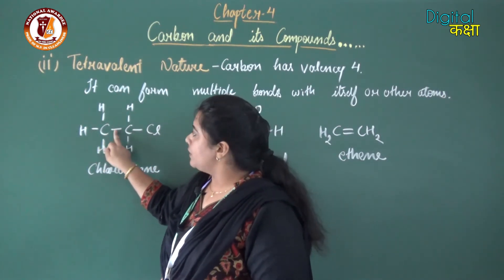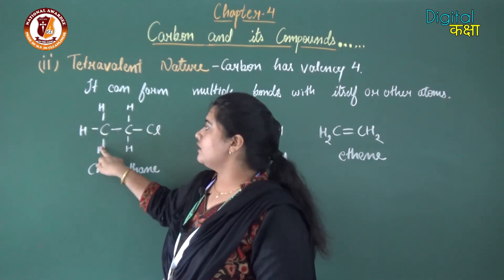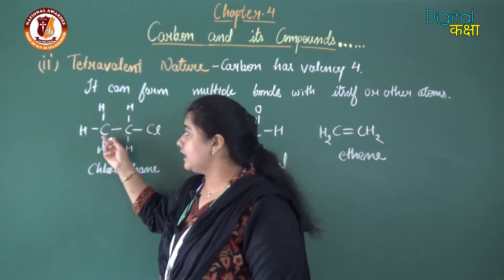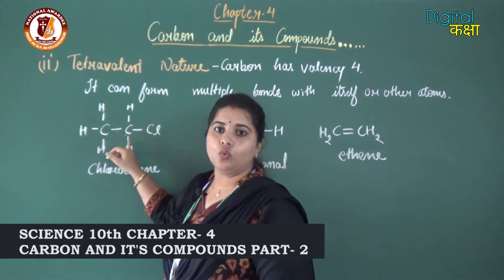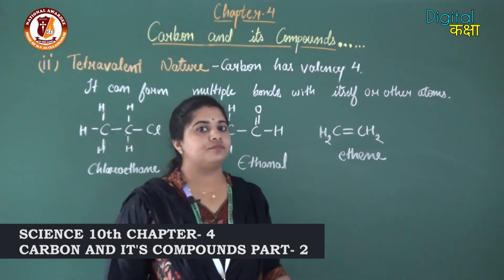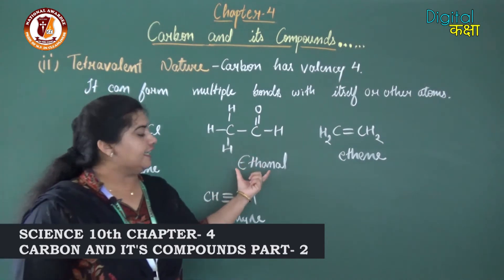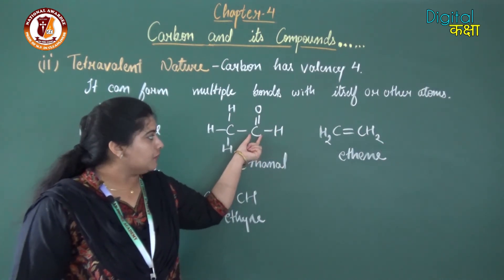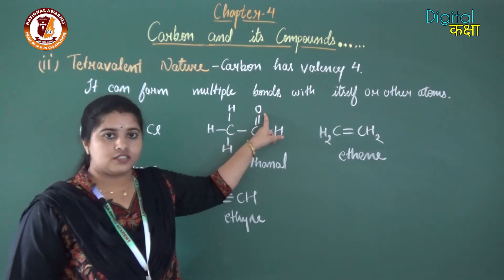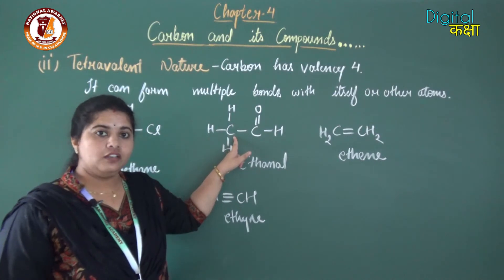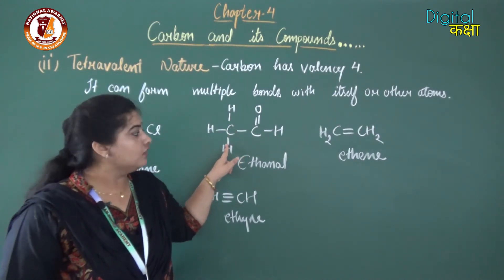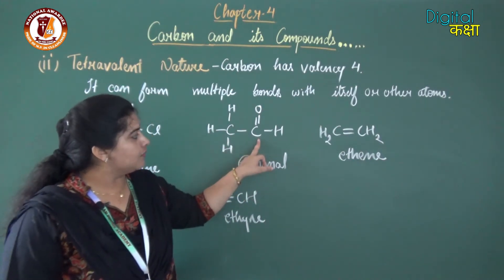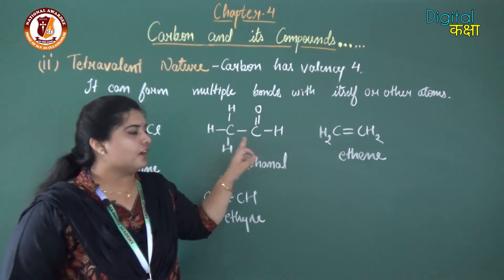In chloroethane, this carbon is also forming four covalent bonds — three with hydrogen and one with carbon. This shows carbon's self-linking property and covalent bonding with other atoms, proving its tetravalency. In ethanol, the aldehyde group shows carbon making a double bond with oxygen (C=O), a single bond with carbon, and this carbon making three single bonds with hydrogen and one with carbon. Here also carbon has multiple bonding, and each carbon has four bonds, which proves its tetravalent nature.